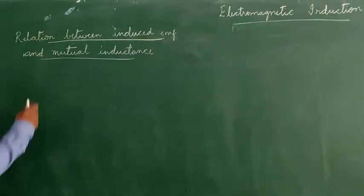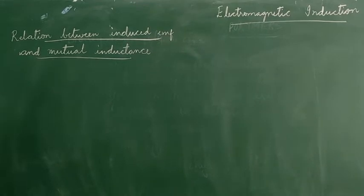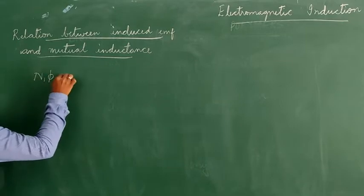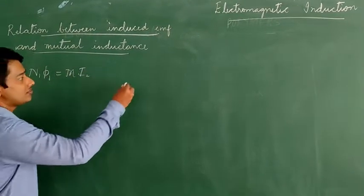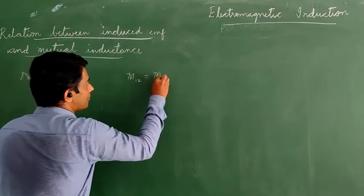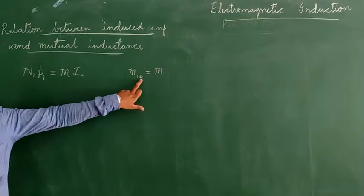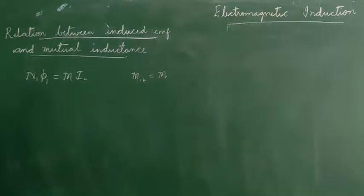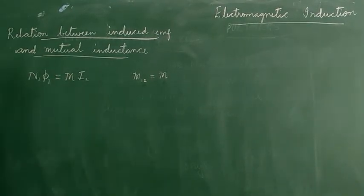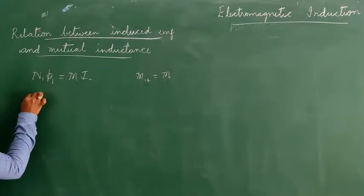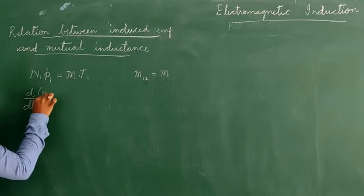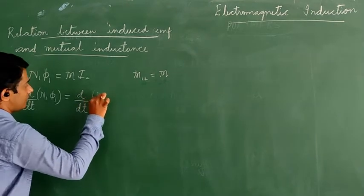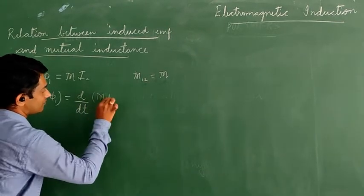The next topic is the relation between induced EMF and mutual inductance. We know N1φ1 equals M × I2. Differentiating both sides with respect to time: d/dt(N1φ1) equals d/dt(MI2).